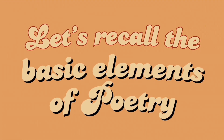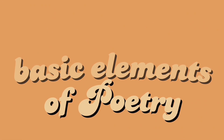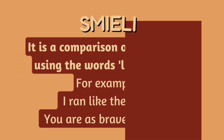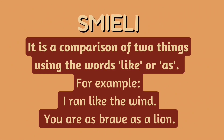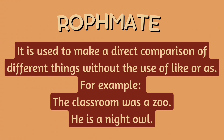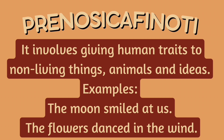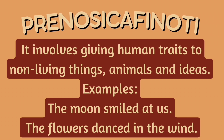First, let's recall the basic elements of poetry. Identify what is being asked using the jumbled words. A simile is a comparison of two things using the words 'like' or 'as' — for example, 'I ran like the wind' or 'You are as brave as a lion.' A metaphor is used to make a direct comparison of different things without the use of 'like' or 'as' — for example, 'The classroom was a zoo' or 'He is a night owl.' Personification involves giving human traits to non-living things, animals, and ideas — examples: 'The moon smiled at us,' 'The flowers danced in the wind.'